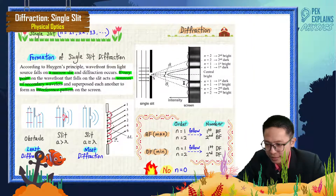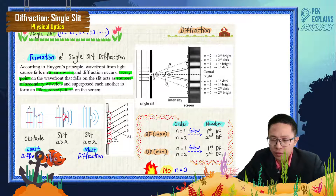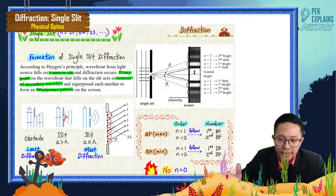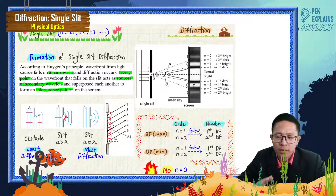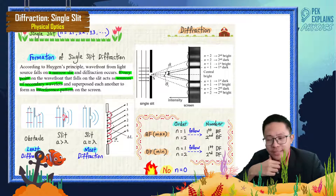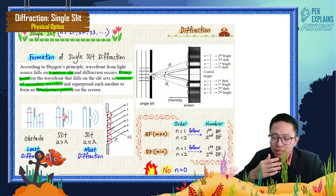Now look at this single slit diffraction pattern. You can see the center is a central bright fringe. It has the highest intensity compared to other bright fringes. If you look at this screen here, the central bright is the widest. But at the sides, the bright fringe is almost very pale — very low intensity, almost becoming dark already.